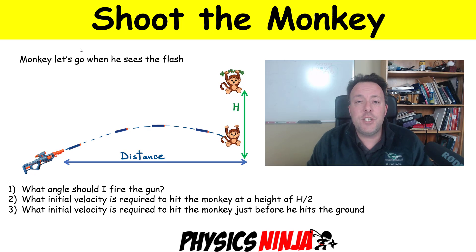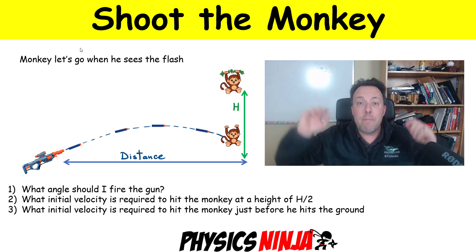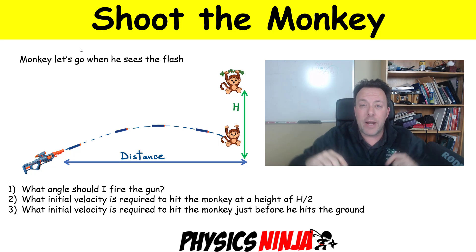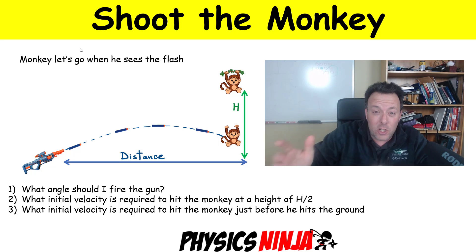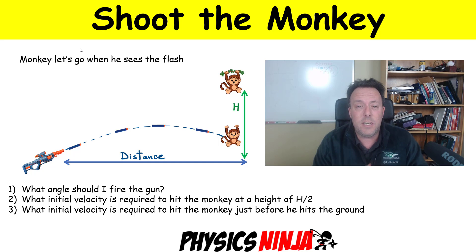Hi everybody, Physics Ninja, and welcome to my video on Shoot the Monkey. Here's our problem for today. We have a monkey hanging on a branch and there's a hunter located at some distance D away from that monkey.